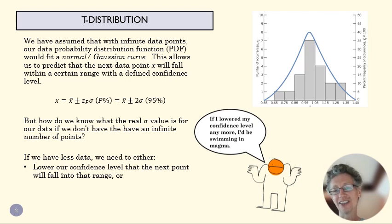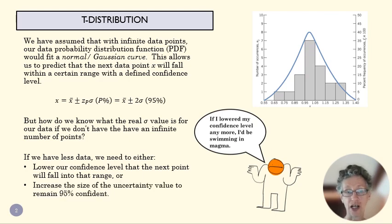Our other option, if we don't want to change our confidence level, is we can increase the size of the uncertainty. That's what we're going to do more often because we want to have a 95% uncertainty - that's sort of a standard engineering practice.